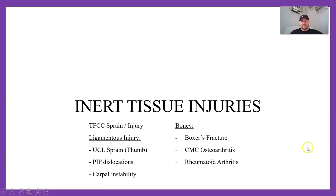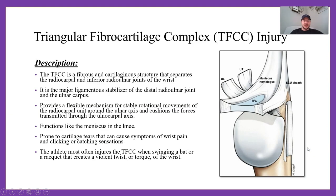Alright, inert tissues — let's go over a TFCC sprain. The TFCC, or triangular fibrocartilage complex, is a fibrous and cartilaginous structure that separates the radiocarpal and the inferior radial ulnar joints of the wrist. It is the major ligamentous stabilizer of the distal radial ulnar joint and the ulnar carpus. It provides a flexible mechanism for stable rotation movements of the radiocarpal unit around the ulnar axis and cushions the forces transmitted through the ulnar carpal axis.